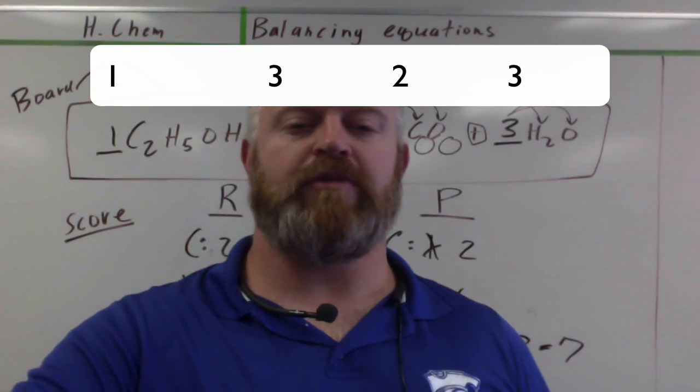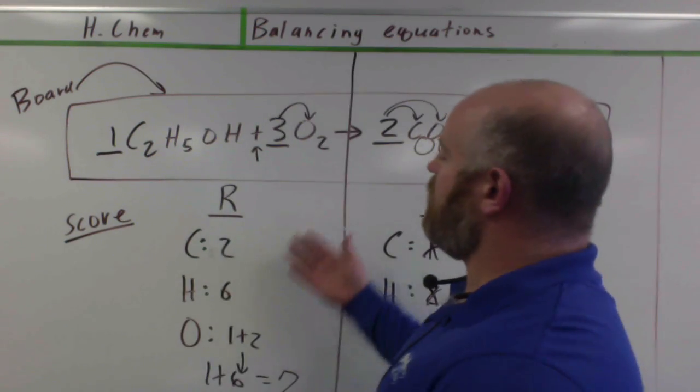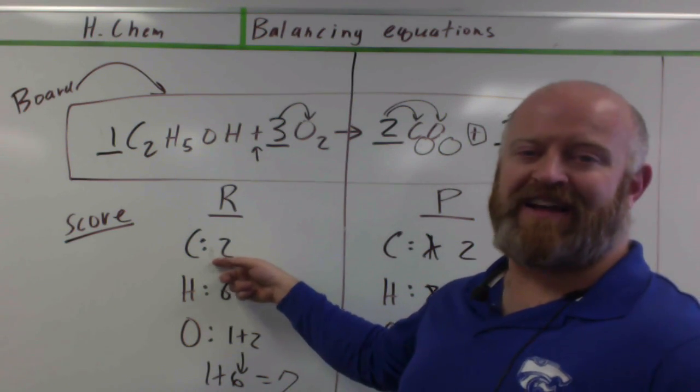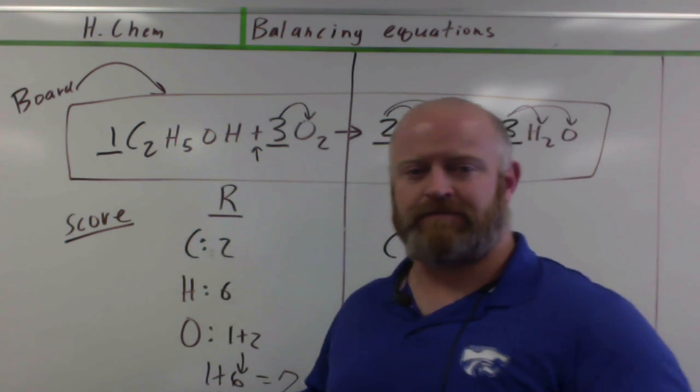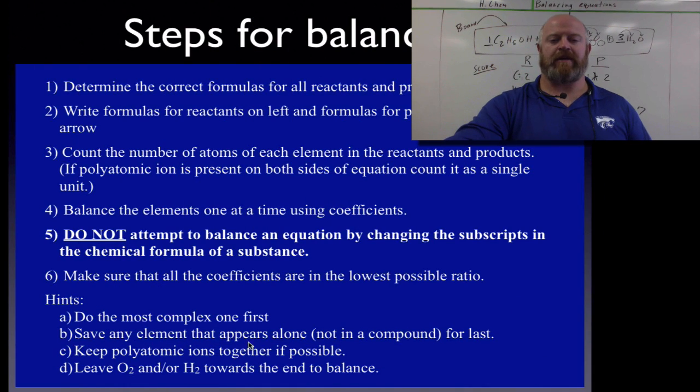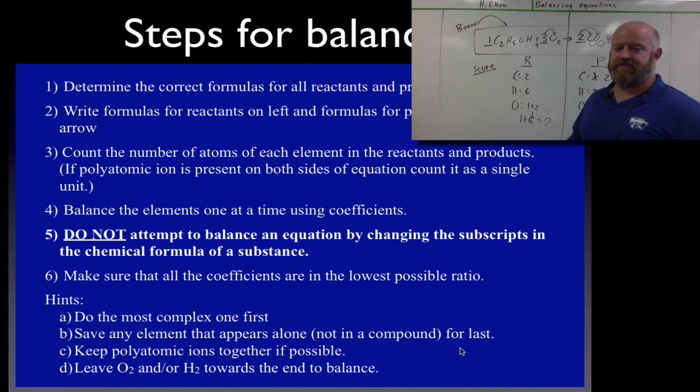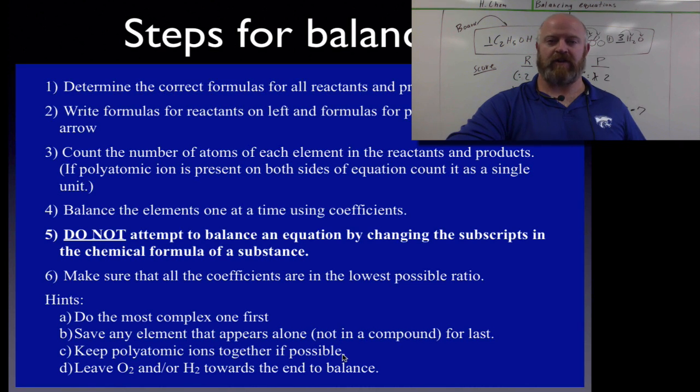Here's some other hints for you. Do the most complex looking thing first. So on this, I saw that my carbon was in this big complex molecule over here. So I balanced that one first. Because I thought that if I got the carbon right, it might make things go easier later on. Save any element that appears alone, not in the compound for last. I did that also. Oxygen was by itself, so that was the last thing I balanced. The beauty of that is, if you wait to do the one that's alone last, sometimes at the end it's already balanced. And sometimes, if you need to put something in there to balance, it doesn't affect anything else in your work. So always save whatever's alone to last. It makes it work easier. Keep polyatomic ions together if possible. We've already talked about that one.